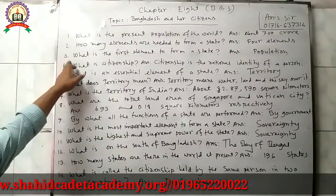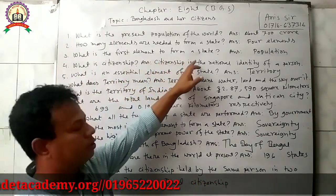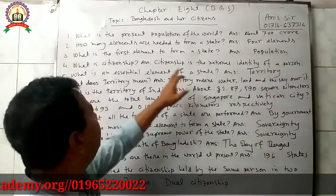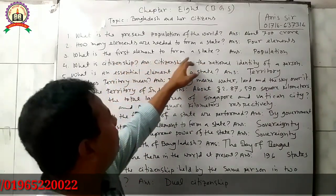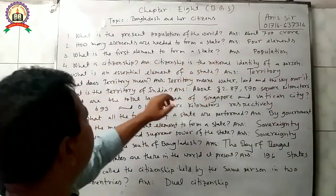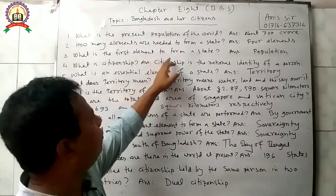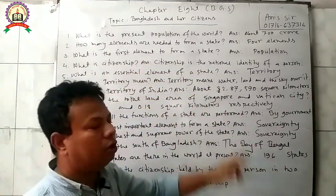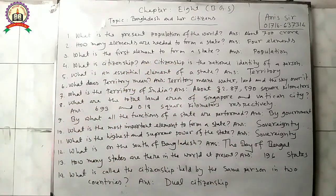Question 3: What is the first element to form a state? Answer: Population is the first element to form a state.